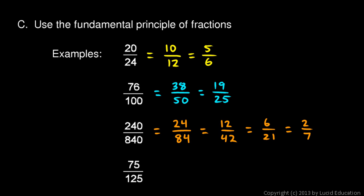75 over 125. What I notice is the 5 on the end — any number that ends in 5 is divisible by 5. So 75 divided by 5 is 15, and 125 divided by 5 is 25. Both of those are divisible by 5 again, so: 15 divided by 5 is 3, and 25 divided by 5 is 5. And we're done.